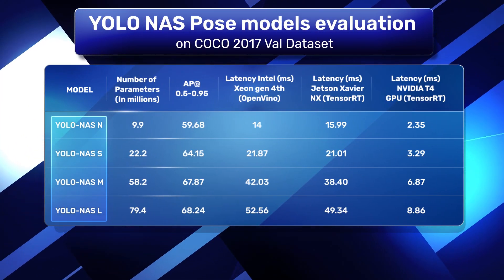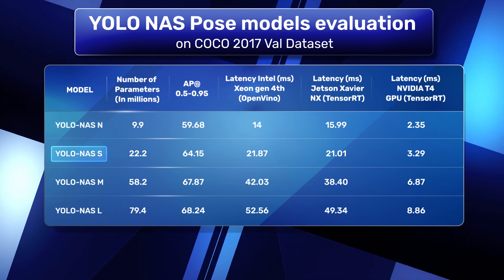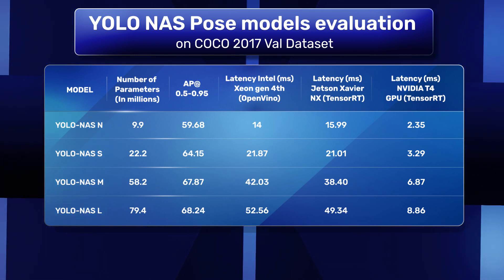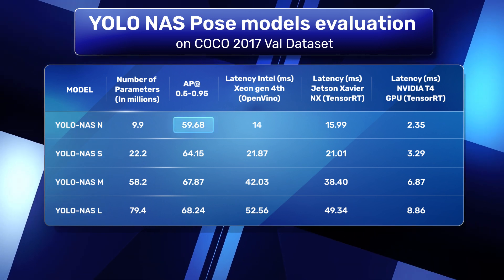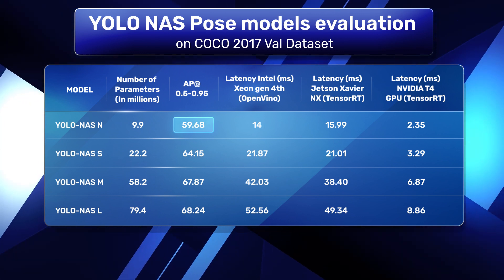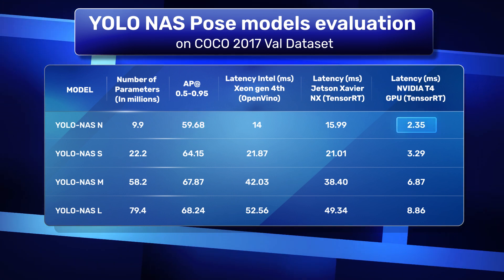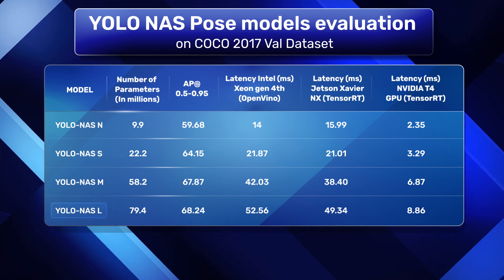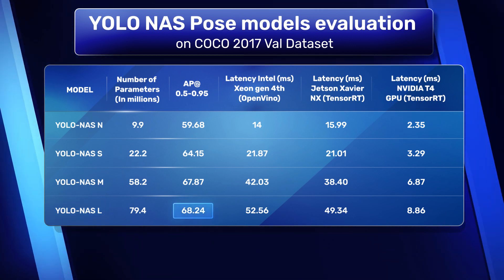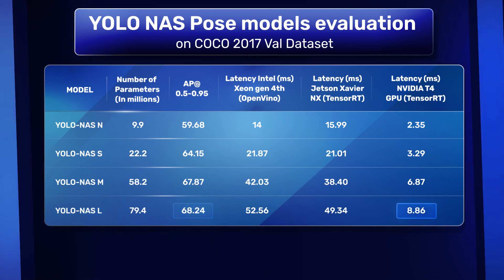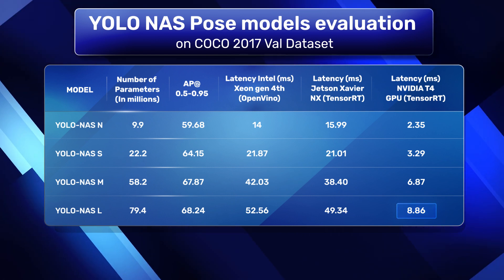DESI has released four models: Nano, Small, Medium, and Large. The smallest model, Nano, has 59.68 AP with 2.35 millisecond inference speed, whereas the Large model has 68.24 AP with 8.86 millisecond inference speed.